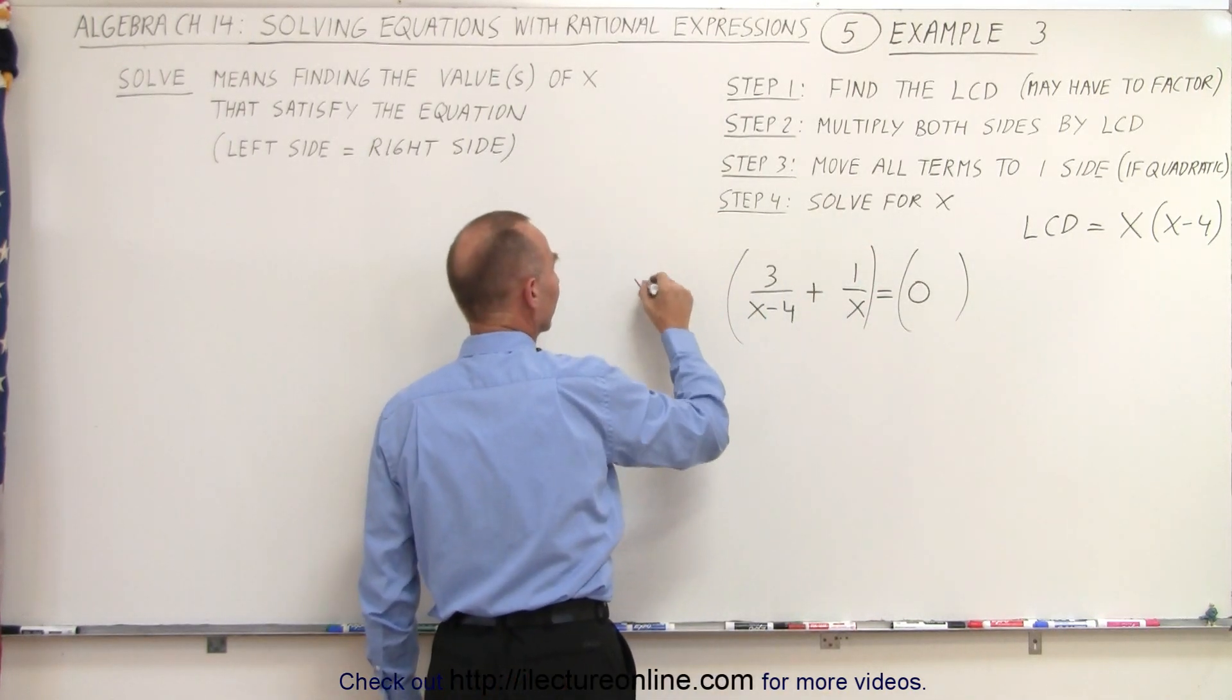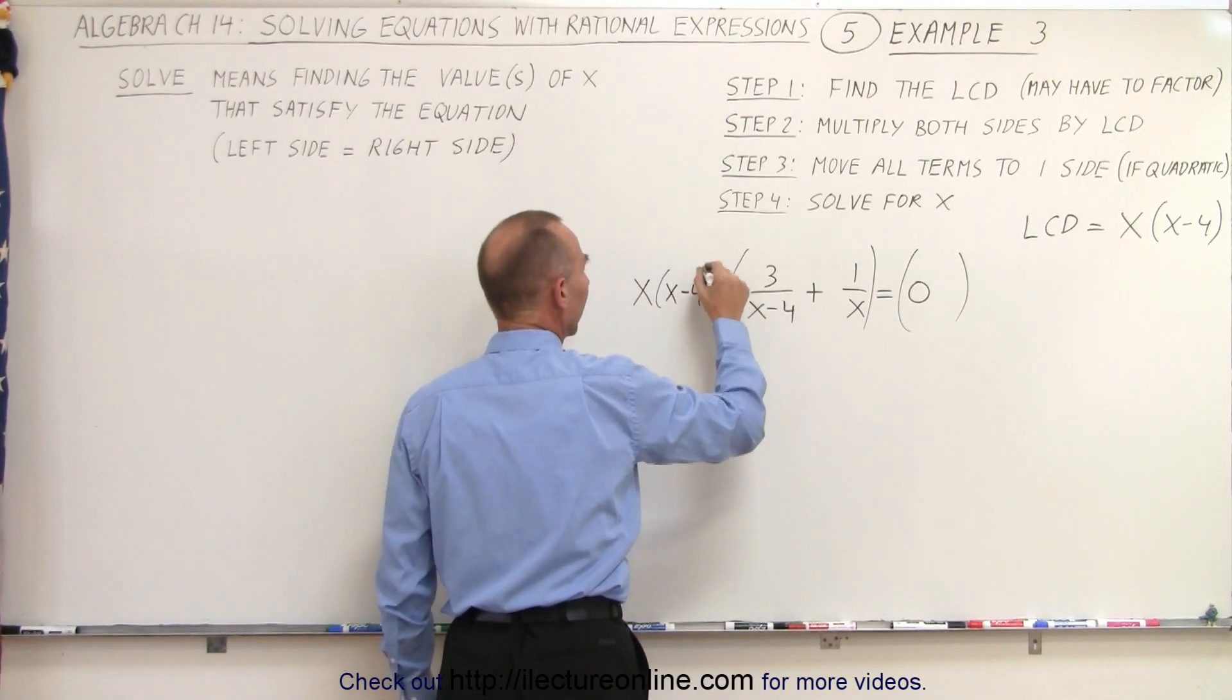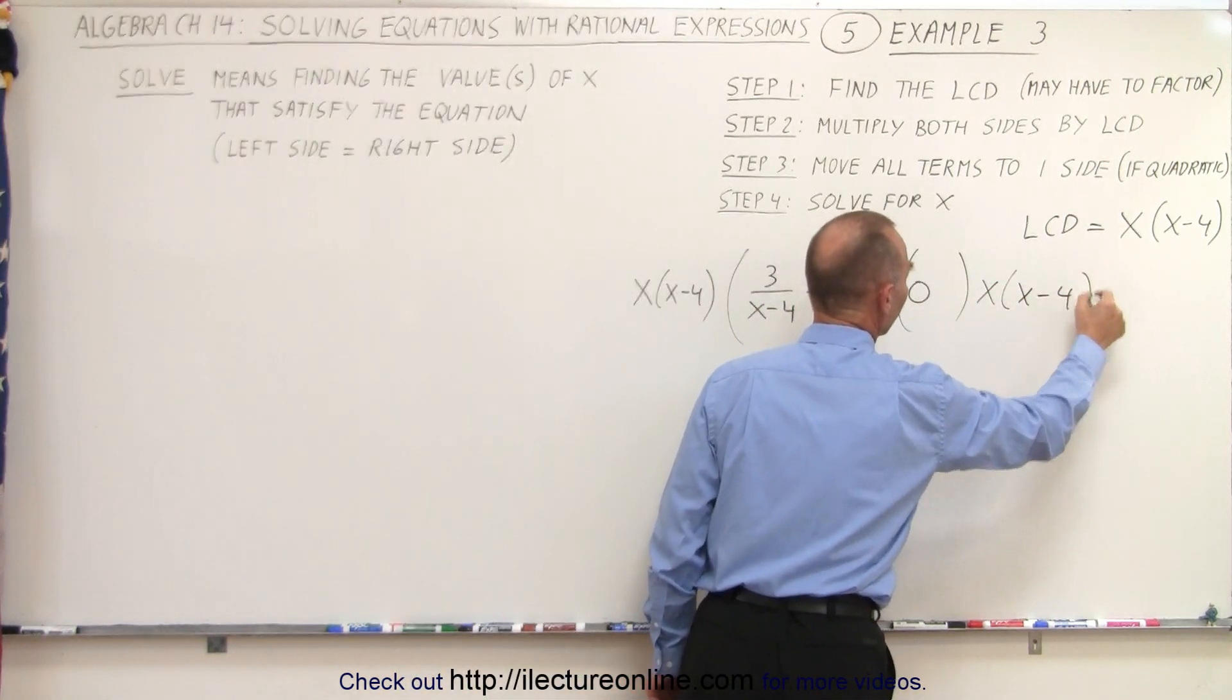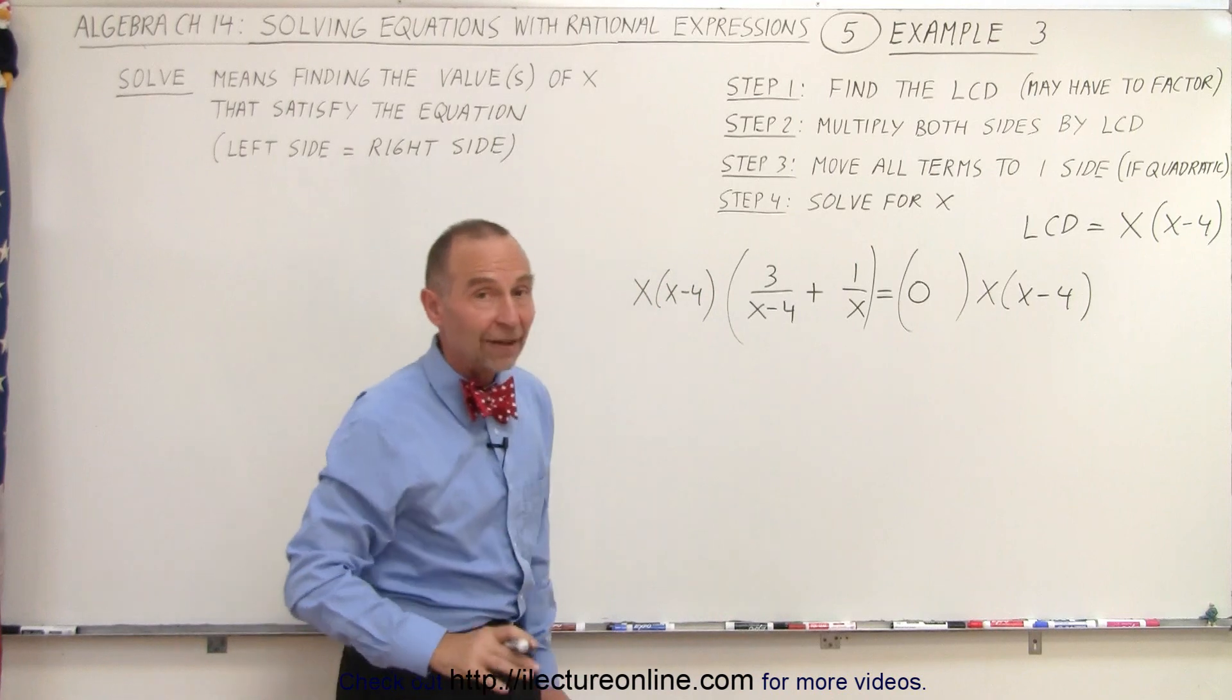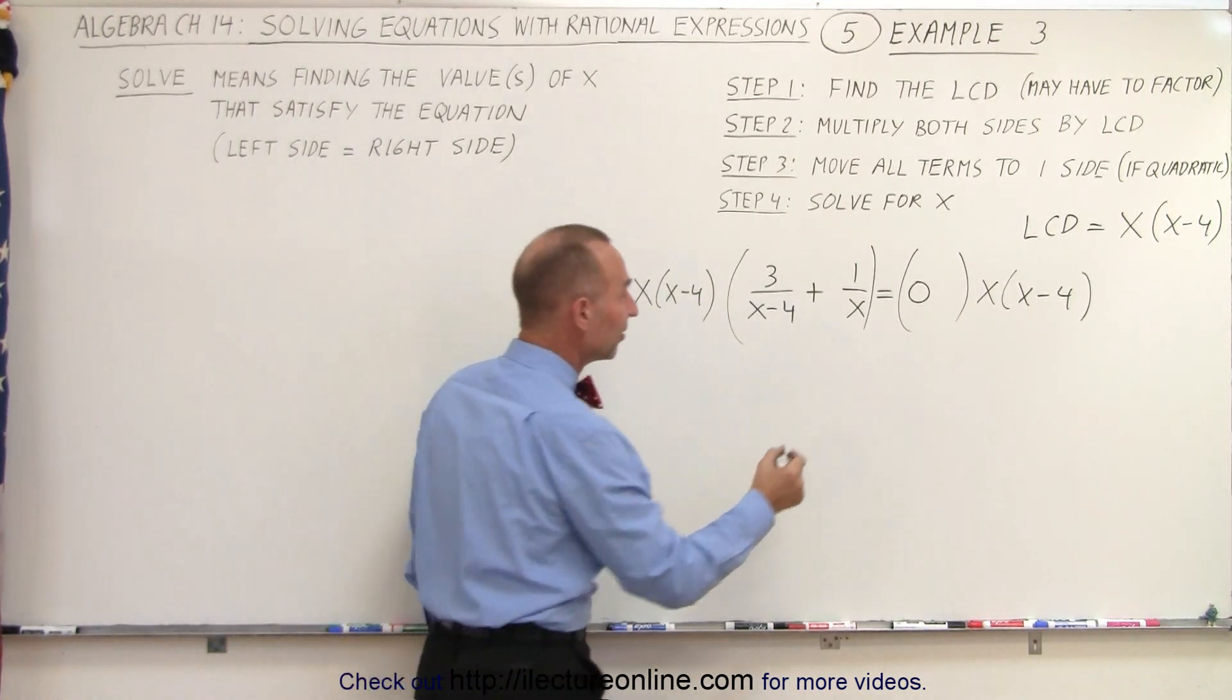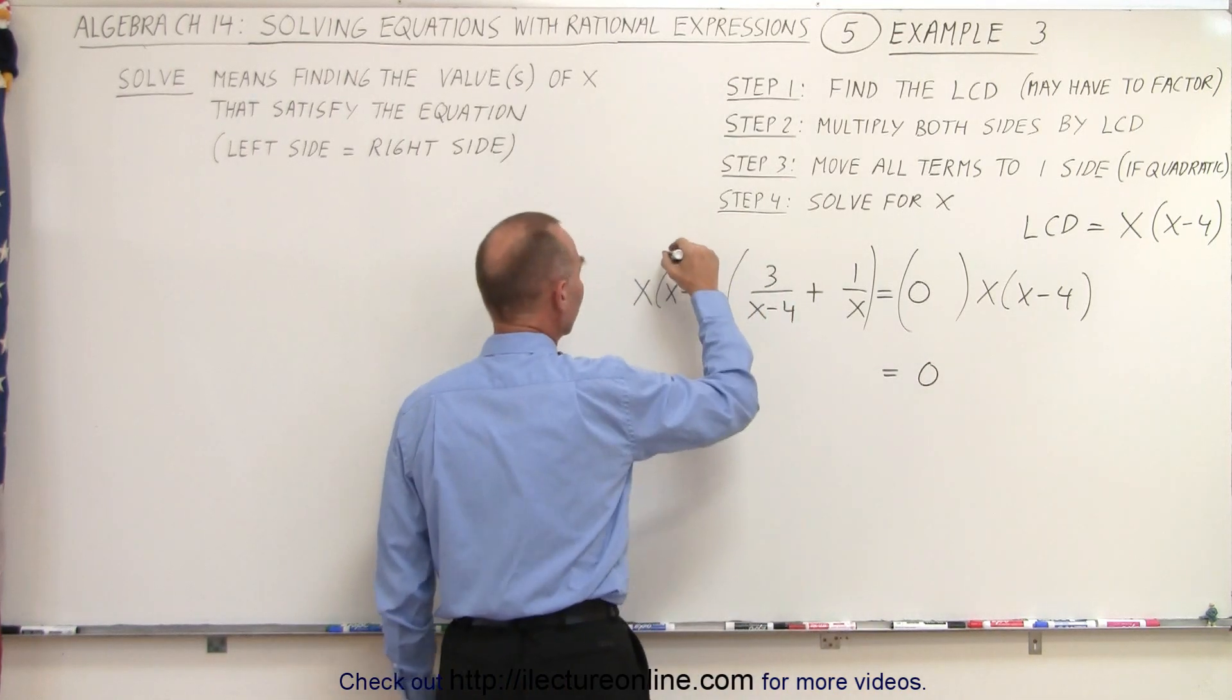So on the left side, we get x times x minus 4, and the same on the right side, x times x minus 4. Now notice on the right side, we have a 0, and 0 multiplied times anything is still 0, so the right side remains at 0.